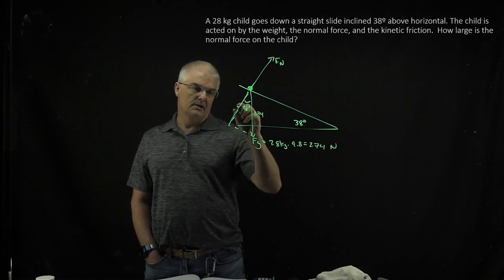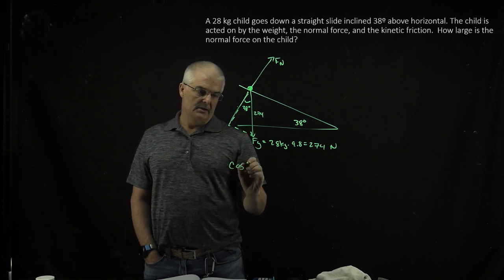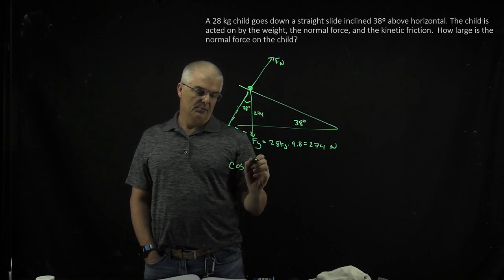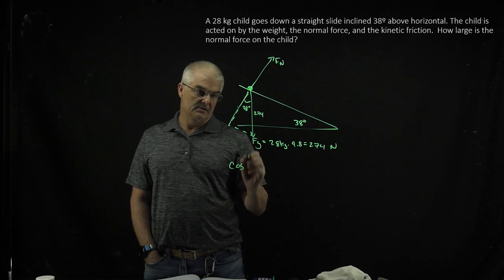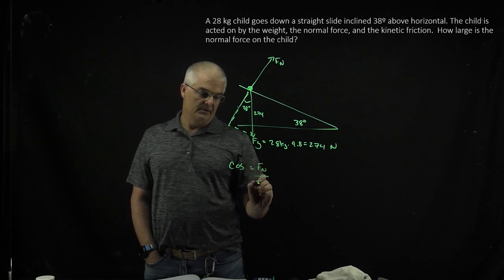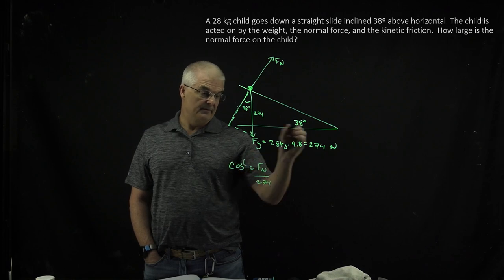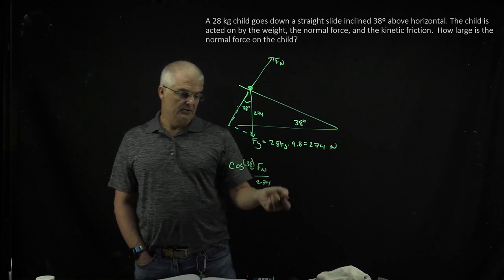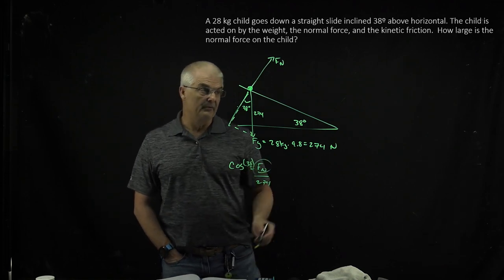So this is cosine. You'd say cosine equals the adjacent, which is what you want to find. That's going to be equal to the normal force over 274, cosine of 38 degrees. And so what you'll do is you'll solve that problem. If you know cosine 38, you can find the normal force.